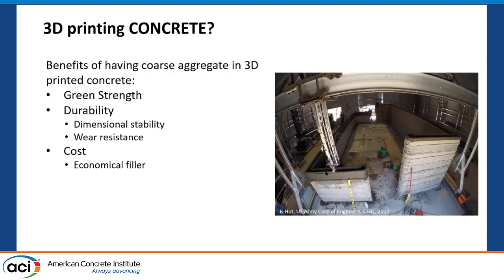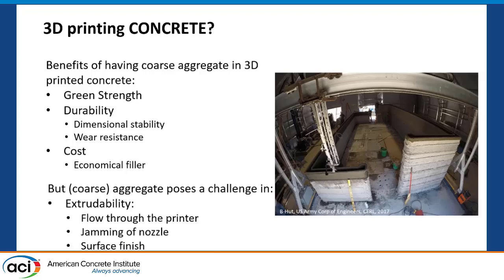But if this is the case, why aren't people already printing with a lot of coarse aggregate in their mixes? Because there are some issues with it, especially with extrudability — you can have issues getting the material to flow through your printer or exit the nozzle, and even with surface finish. But there have been successful 3D printing with concrete already. For example, the Army Corps of Engineers in Champaign, Illinois have already printed with 3D aggregates.